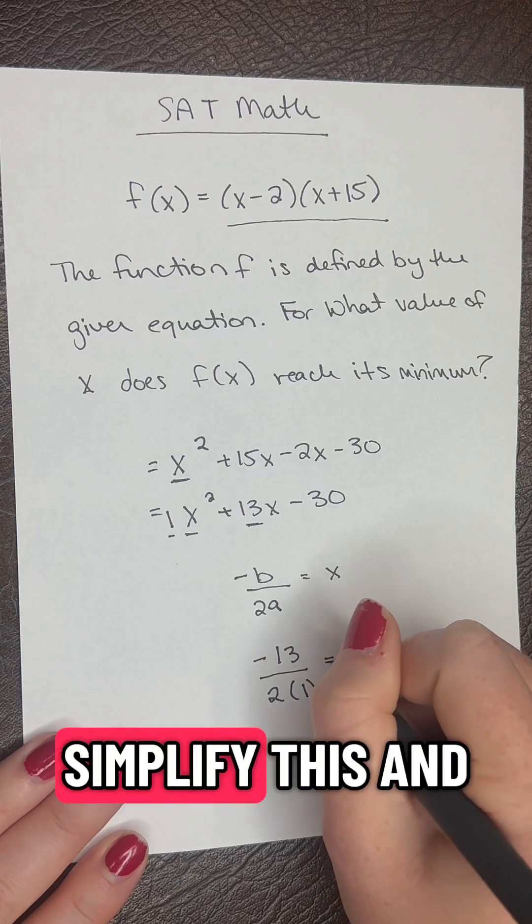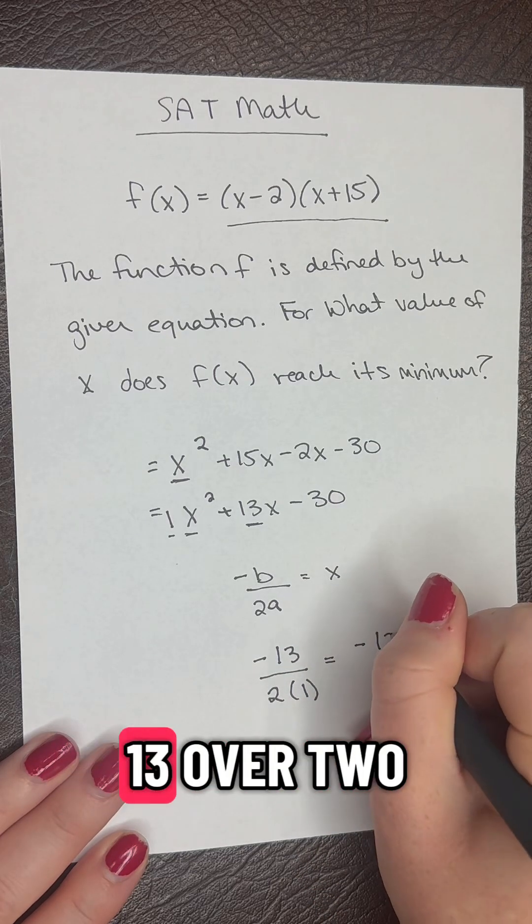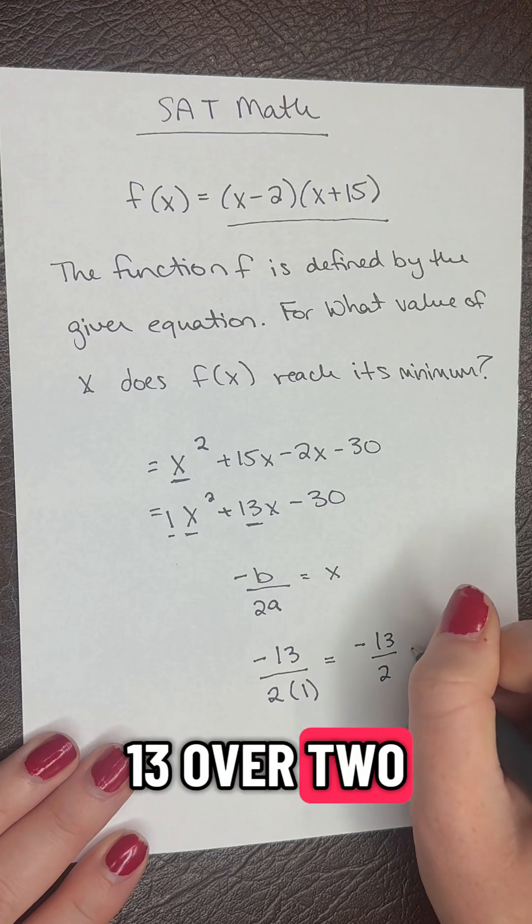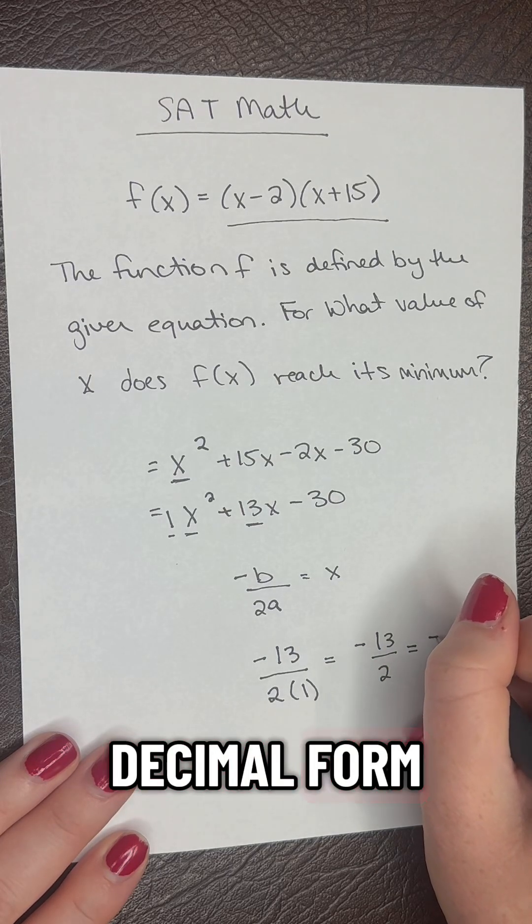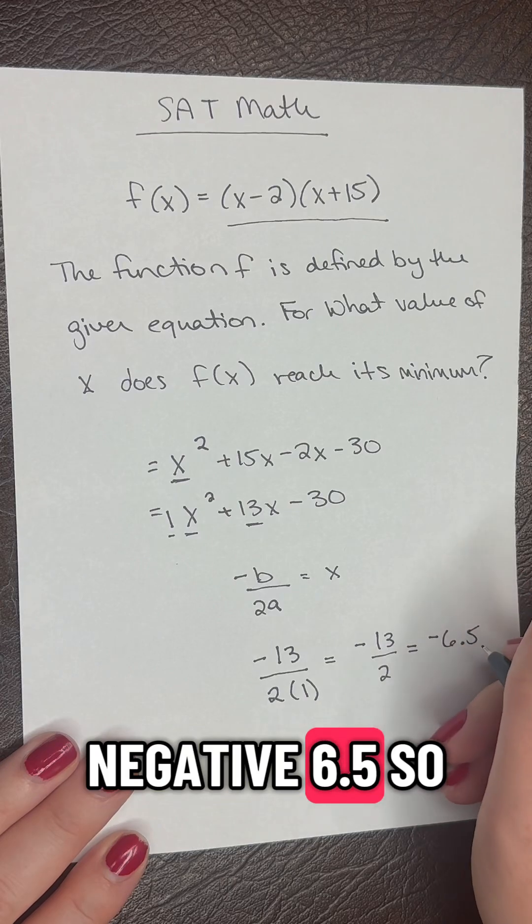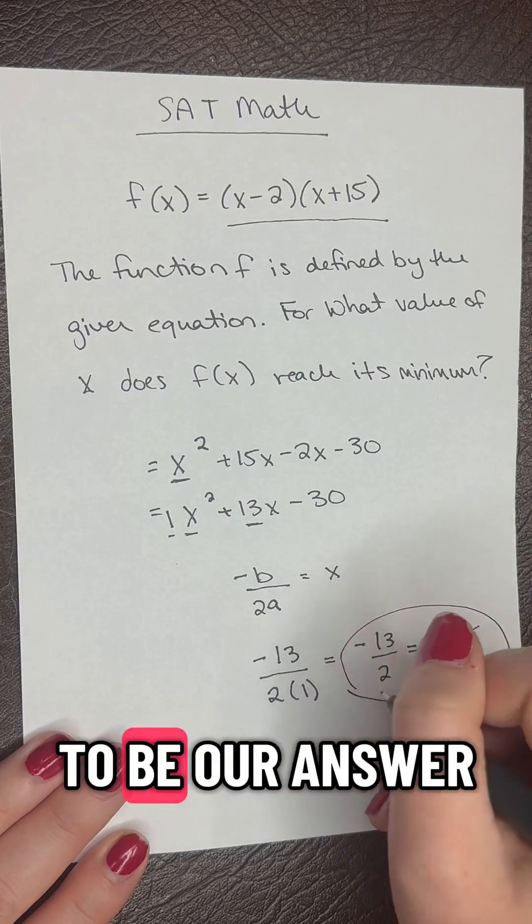Then we simplify this and get negative 13 over 2, or in decimal form, negative 6.5. So this is our answer.